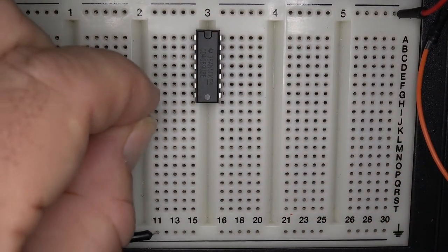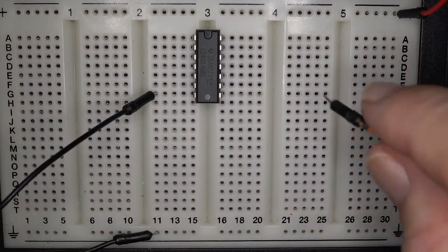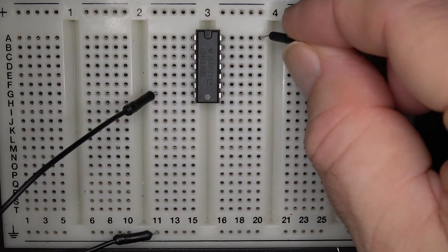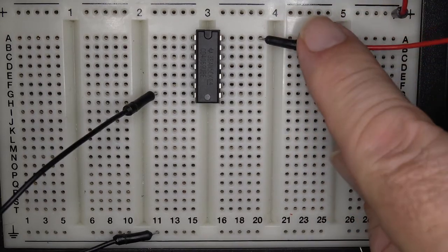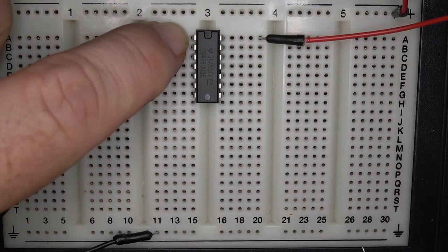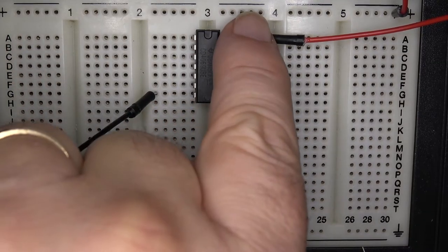It's powered like many chips of this era with pin 7 as ground and the positive supply on pin 14. The pins are numbered anti-clockwise 1 through 7, then 8 through 14.